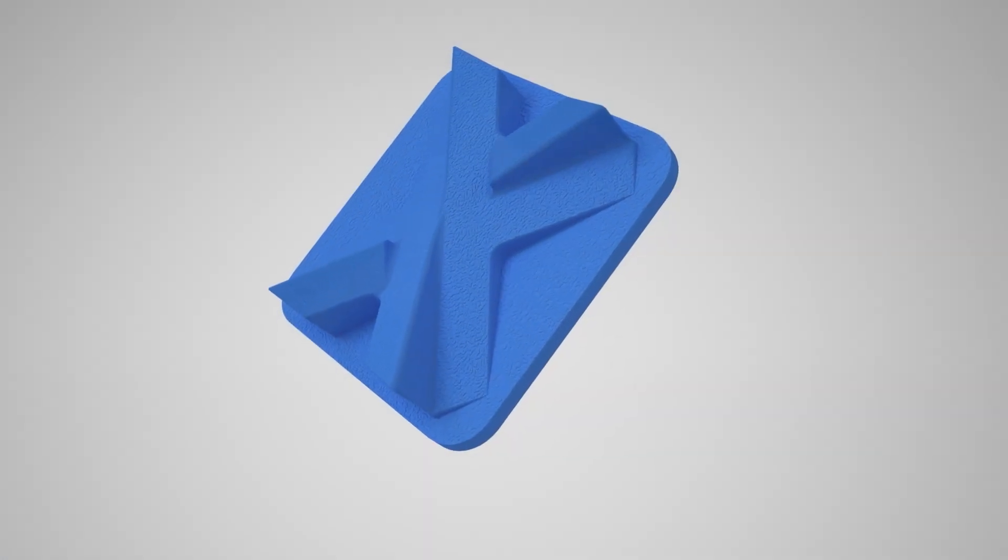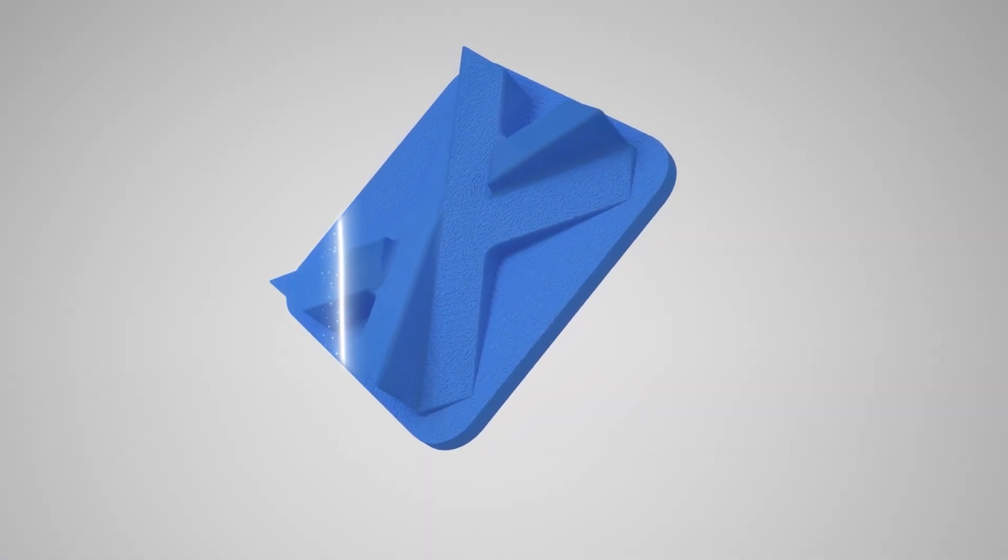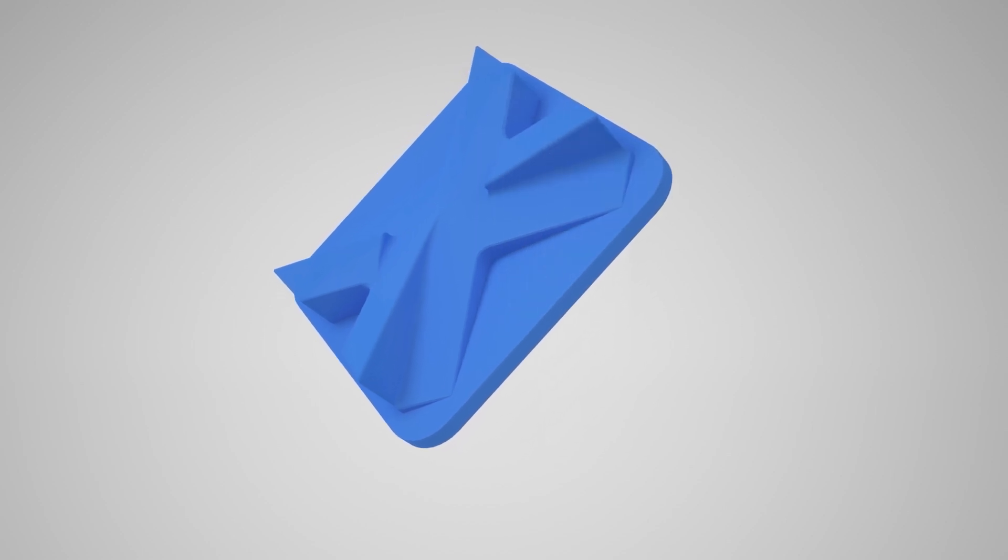SLS printed parts come out grainy. If necessary, they can be post-processed using vapor polishing or bead blasting for example.